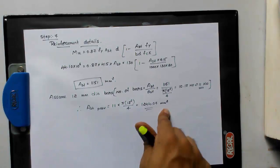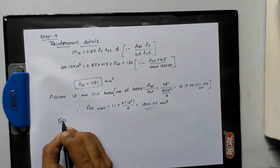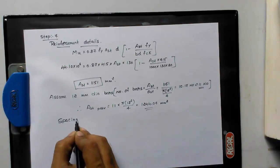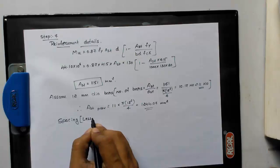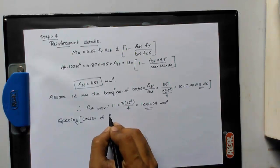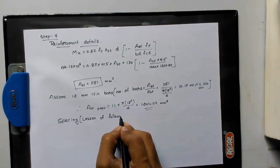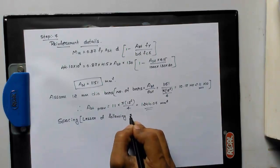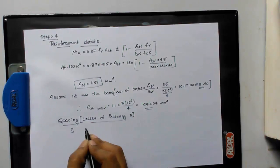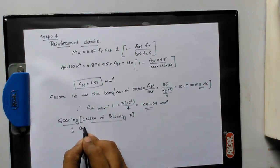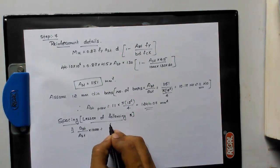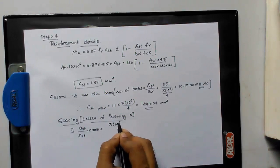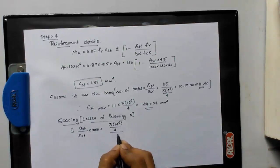Now we need to find what is the spacing between the bars. Spacing is equal to lesser of following three: first one small ast by capital AST into 1000. What is the small ast? Pi into 12 square by 4 divided by capital AST, which is 1244.07, into 1000.